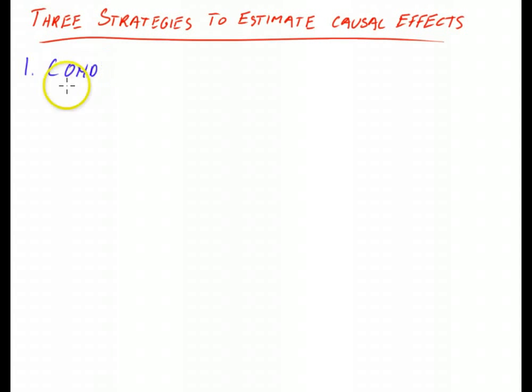The second method is based on natural experiments using exogenous variation, something called the instrumental variables methods or natural experiments. And the third method is based on isolating the mechanisms.